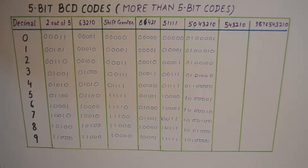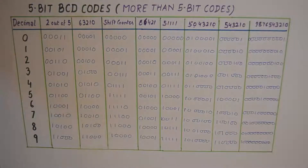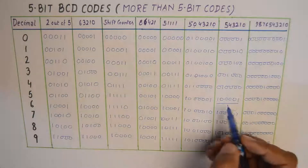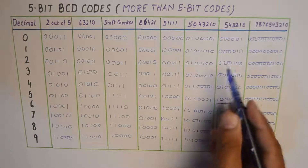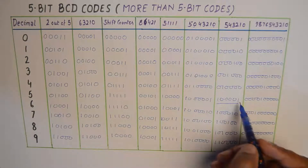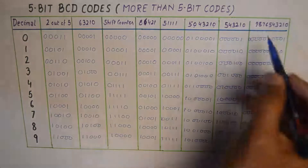Then we have the 5-4-3-2-1-0 code — it's a 6-bit code. You generate the numbers by putting a 1 at the assigned weight. I'll fill up the table; it's pretty elementary. You need to take care of this code where you simply assign a 1 at the position where the weight is 5, and also assign a 1 where the weight position is 0.